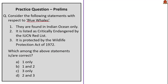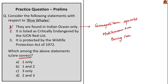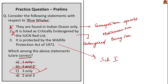The next question is about blue whales. Statement 1 — they are found in the Indian Ocean only — is wrong; blue whales are a cosmopolitan species found in all oceans except some regional seas like the Mediterranean, Arctic and Bering Seas. Since statement 1 is wrong, eliminate options A and B. Statement 2 — listed as critically endangered by IUCN — is wrong; blue whales are listed as endangered, not critically endangered. Therefore statement 3 is correct and the answer is option C. Blue whales are also protected under Schedule 1 of the Wildlife Protection Act of 1972.